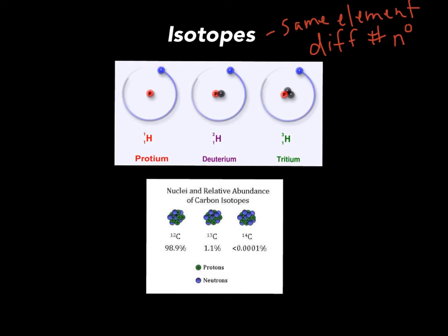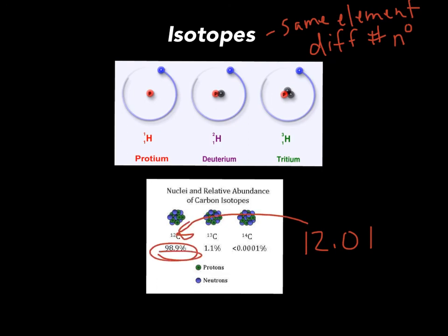Same thing with carbon — these are all carbon with 6 protons in the nucleus. Mass number 12 means 6 neutrons, mass number 13 means 7 neutrons, and mass number 14 means 8 neutrons. Notice the relative abundance: 98.9% of naturally occurring carbon atoms are carbon-12, only 1.1% are carbon-13, and 0.0001% are carbon-14. That's why the average atomic mass for carbon is 12.01 — it's very close to 12 because most atoms are carbon-12.